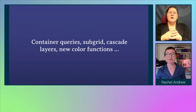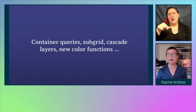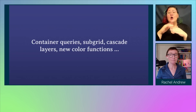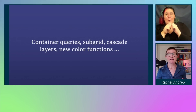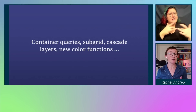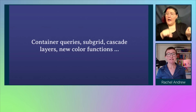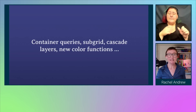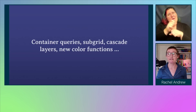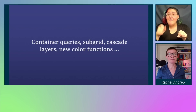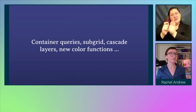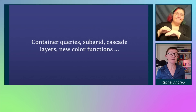We have things like container queries, subgrid, cascade layers, new color functions. You can't look at Twitter without seeing someone really excited about something new that's coming to the web platform. Not all of those things raise particular accessibility concerns, but others could — and that might be in a good way or a bad way. Even things that seem like they shouldn't really affect accessibility could cause an issue if they cause an unexpected problem somewhere else, or perhaps they cause a change in development habits that leads to problems. So there's always things to think about when we get new tools to play with and how they might affect some of our users.